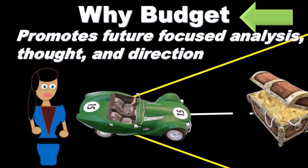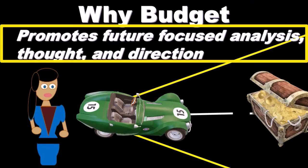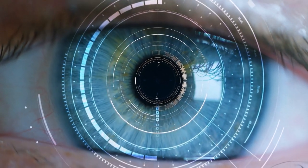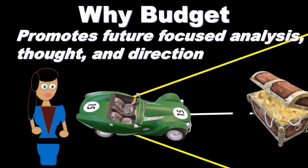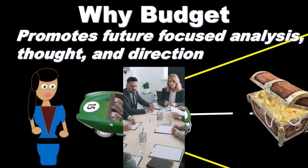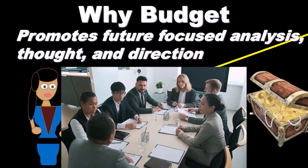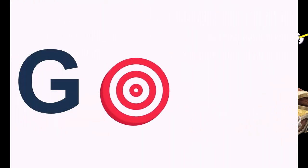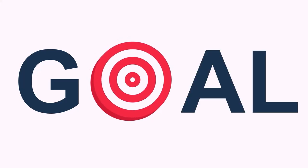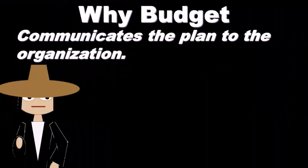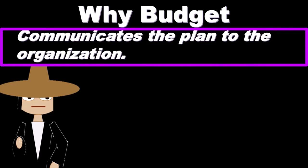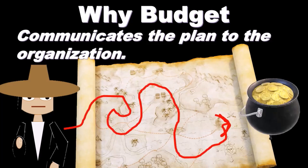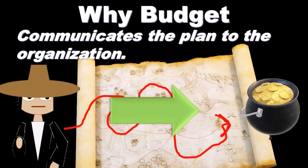Why budget? The budget promotes future focus, analysis, thought, and direction. When we're considering the budget we're focusing out into the future and getting that vision statement out — the vision being the long-term focus. The budget takes that long-term vision and puts it into digestible, actionable chunks: yearly, quarterly, monthly, allowing everybody in the organization to be focused toward that immediate goal. Our day-to-day decisions can align to the immediate goal and be in alignment with those future objectives. Once we have the budget together, it becomes our communication tool — our roadmap to communicate to the organization, with clear actionable steps.